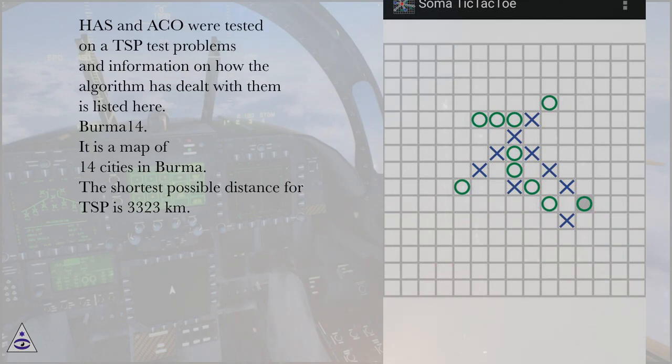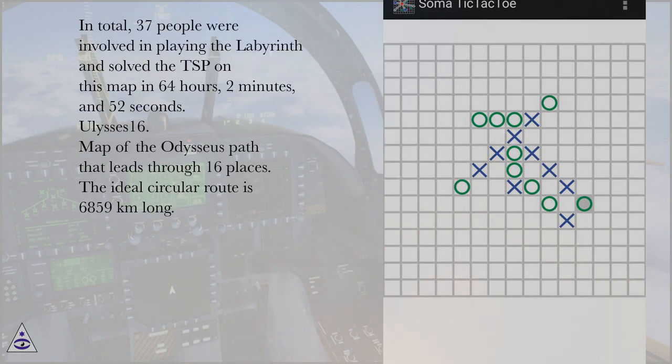Burma 14: It is a map of 14 cities in Burma. The shortest possible distance for TSP is 3,323 kilometers. In total, 37 people were involved in playing the labyrinth and solved the TSP on this map in 64 hours, 2 minutes, and 52 seconds.